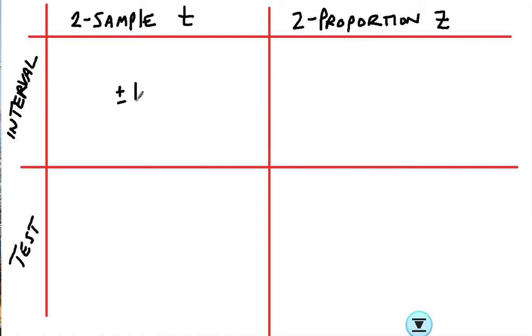For your interval formulas, you're always going to have something plus or minus. If it's a t test, you're going to be dealing with a t star. Over here we're going to have something plus or minus. If it's z, we're going to have a z star.